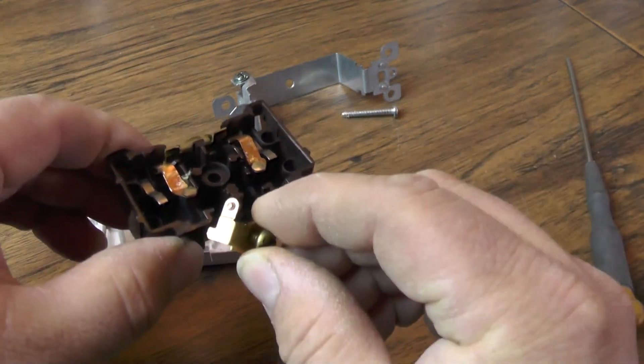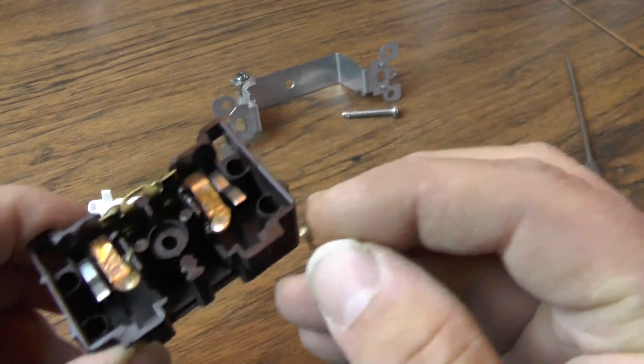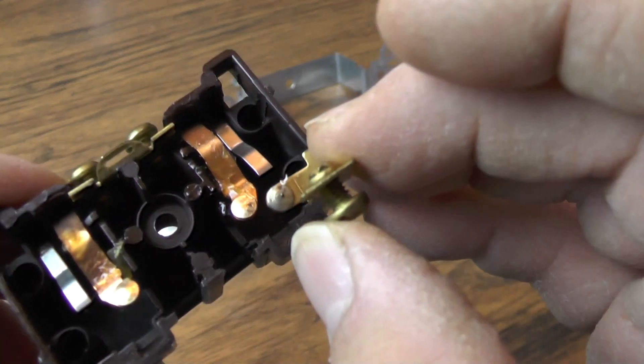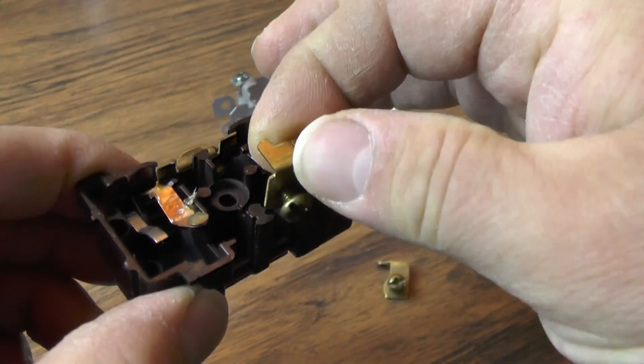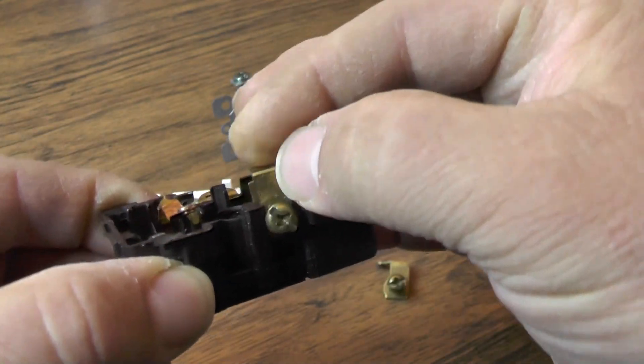And then here is the contact. So you got the two little round pieces. They're what actually make contact for the switch to work. Just kind of slide that down into there.